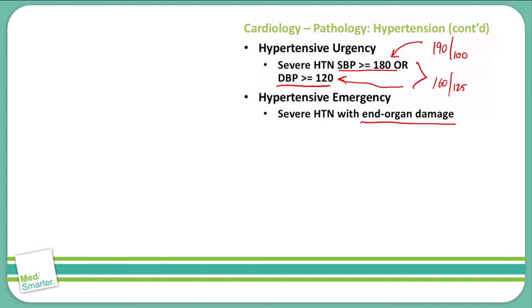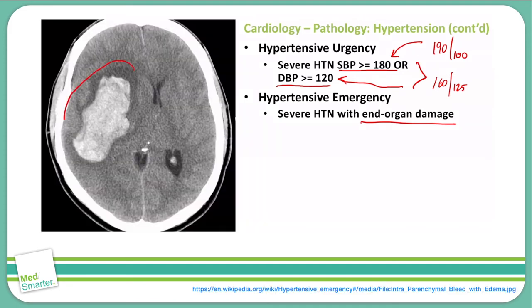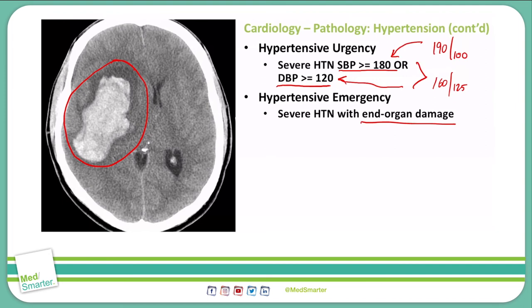End organ damage is any time that we see downstream effects of this hypertension. Specifically, as seen in this picture, we are seeing a hemorrhagic stroke due to hypertension. We can also see things like encephalopathy, retinal hemorrhages and exudates, and papilledema in the eyes. There are also possibilities of myocardial infarction and heart failure, aortic dissection, kidney injuries, and eclampsia or microangiopathic hemolytic anemias — all possible as end organ damage associated with hypertensive emergencies.